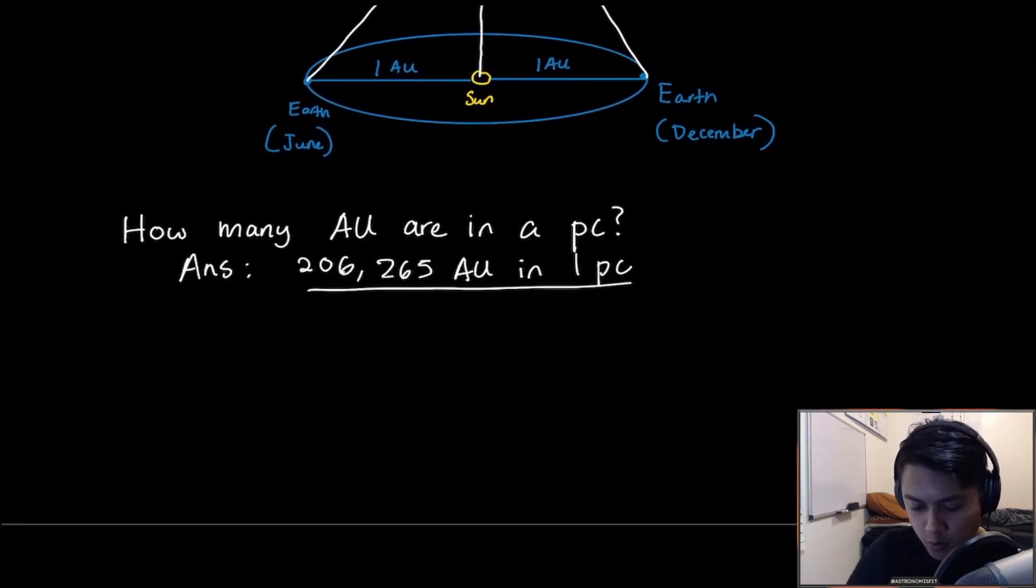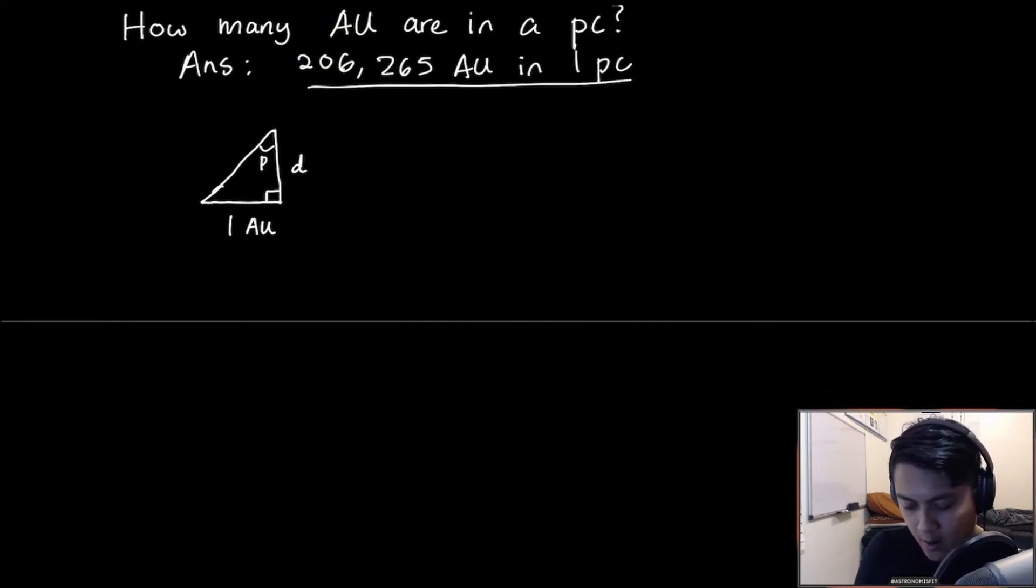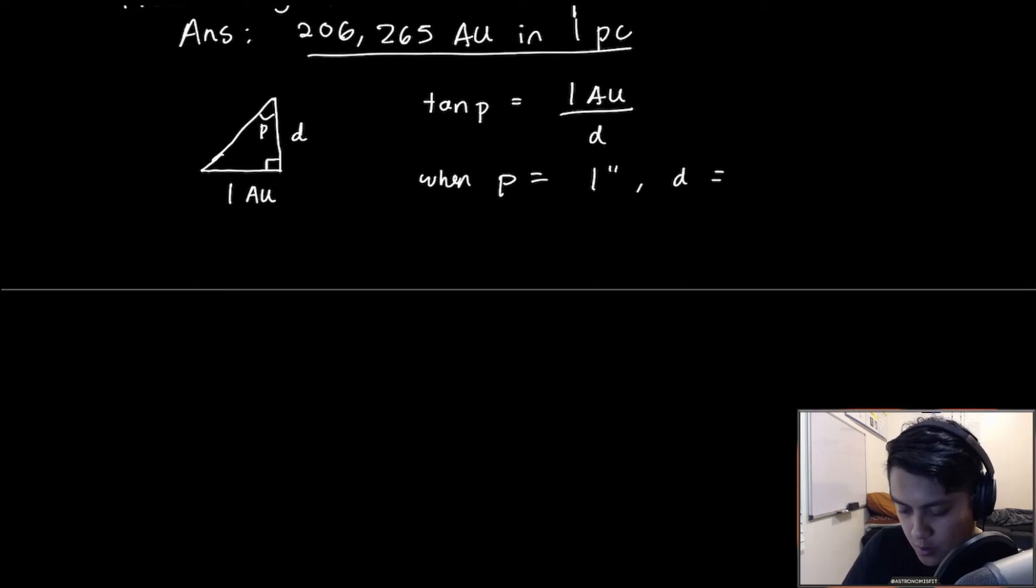We're going to draw the triangle here that we had between the Earth, the Sun, and that star. We had P for the parallax angle, we had D here for the distance, which was one parsec in the example, and we have one AU down there. We know from trigonometry that tangent of P is equal to 1 AU divided by D. And I'm going to show you that when P equals 1 arcsecond, D is equal to 206,265 AU.